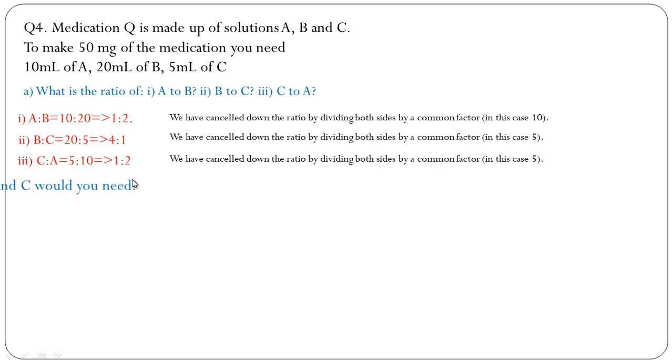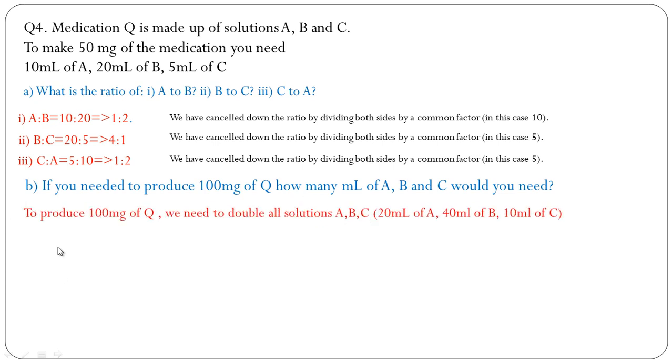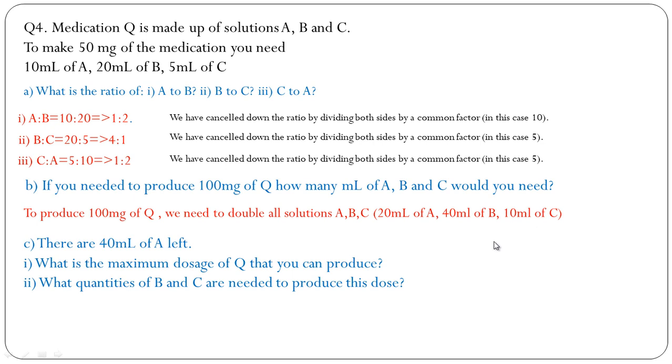Part (b): If you need to produce 100 mg of Q, how many ml of A, B, and C would you need? To produce 100 mg of Q we need to double all solutions A, B, C: that is 20 ml, 40 ml, and 10 ml of C.